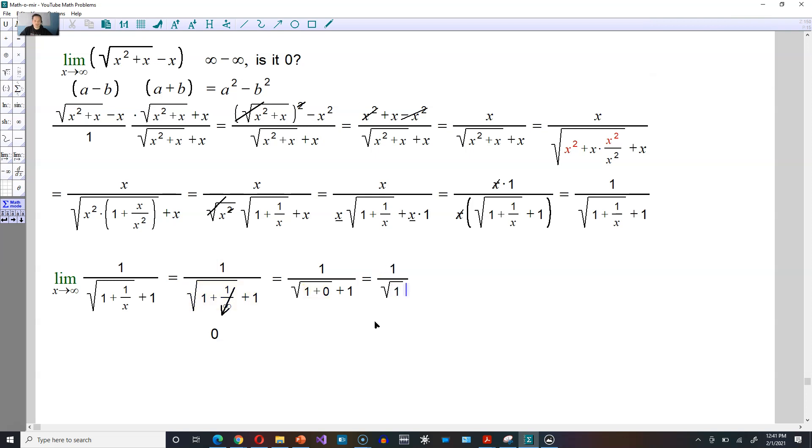Which is of course then 1 over 2. This is clearly not equal to 0 the way you may have concluded by looking initially at infinity minus infinity. Sometimes our intuition in other words is not mathematically confirmed.